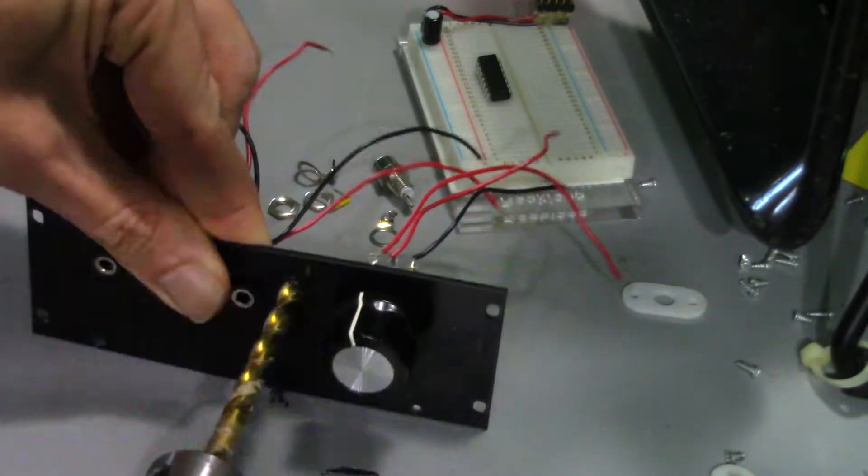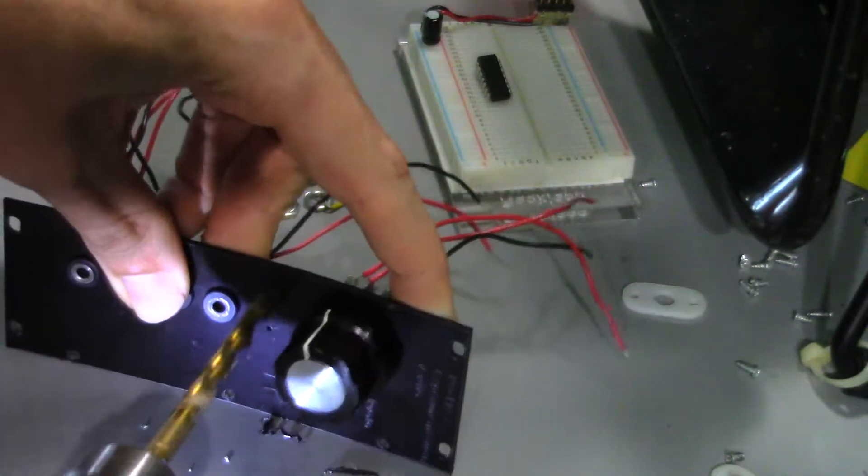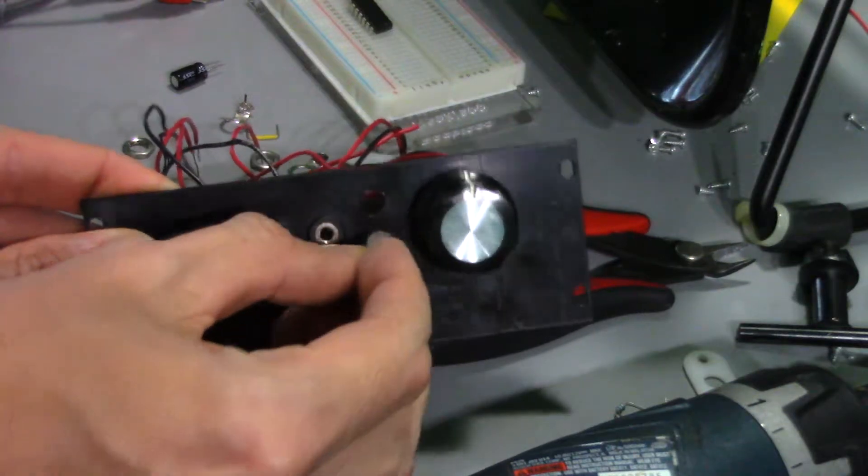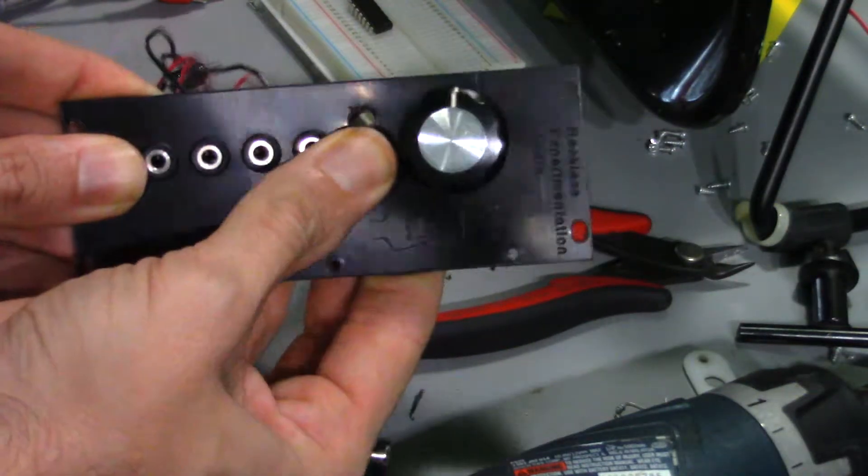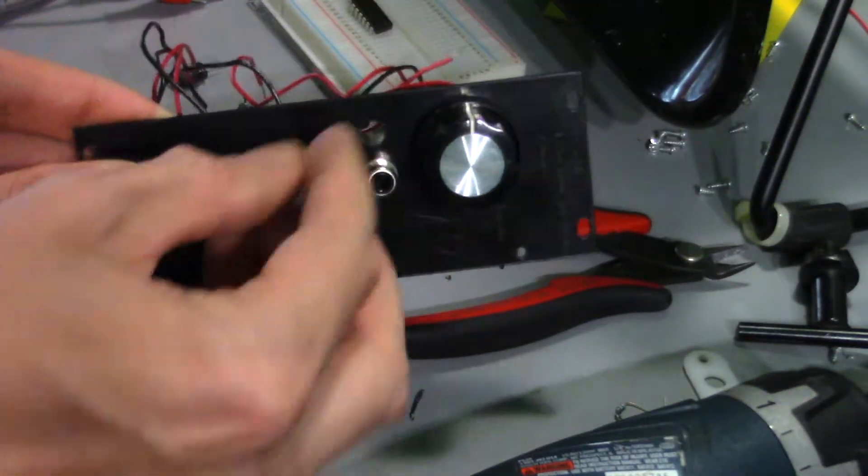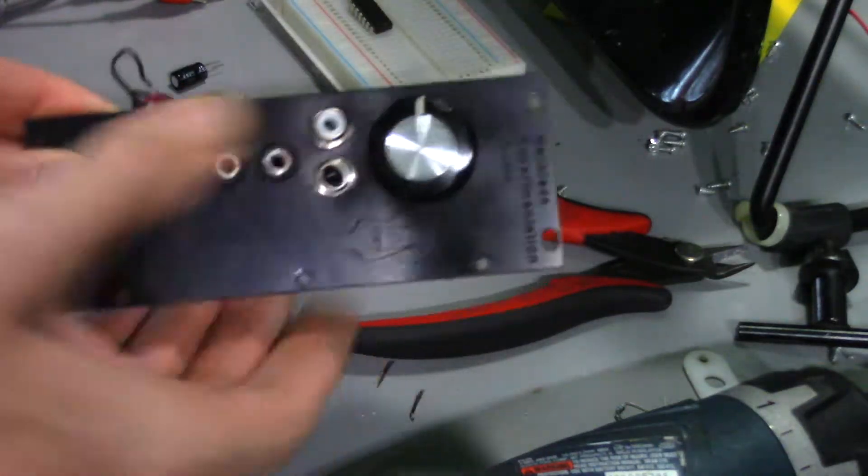Starting with some pilot holes, then quarter-inch holes, two RCA jacks are mounted to connect to the reverb tank. It's a good idea to use different colored jacks, so it's easy to see which is the input and output.